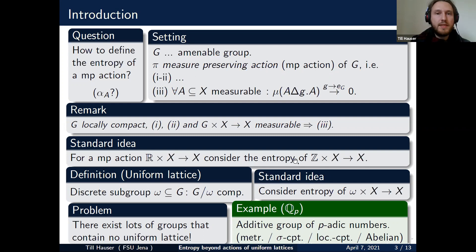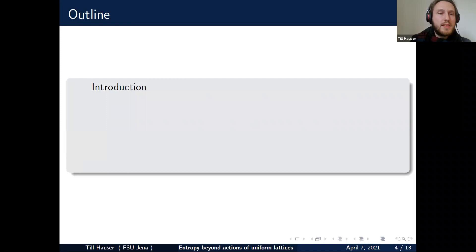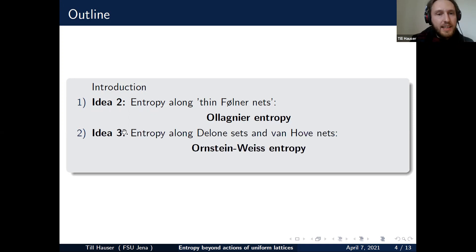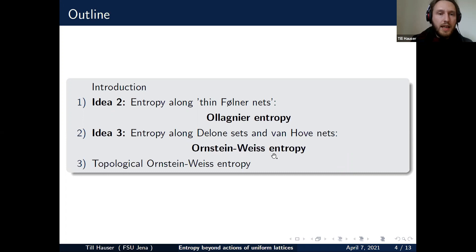So if you want to define entropy for this nice group, you have to work a little bit more. I want to present two ideas. The first is thin Følner nets, a generalization of Følner nets to general amenable groups, using ideas of Jean Moulin-Ollagnier to define so-called Ollagnier entropy. And the second idea is to use the better known van Hoven nets and do averaging along Delaunay sets — using techniques of Ornstein and Weiss, yielding the so-called Ornstein-Weiss entropy. At the end I want to say something about topological entropy and possibly pressure.